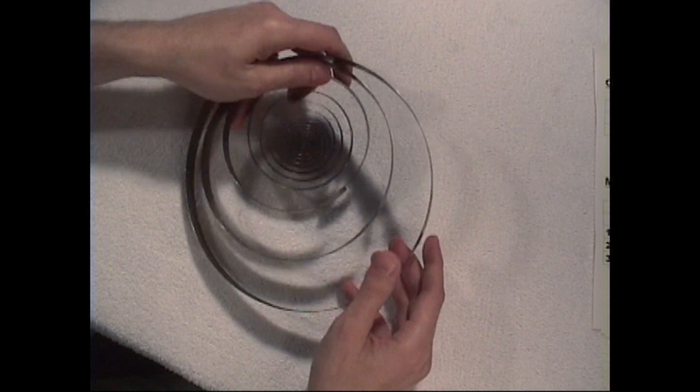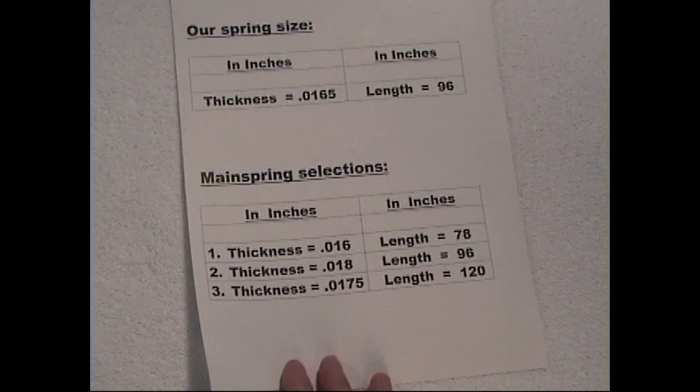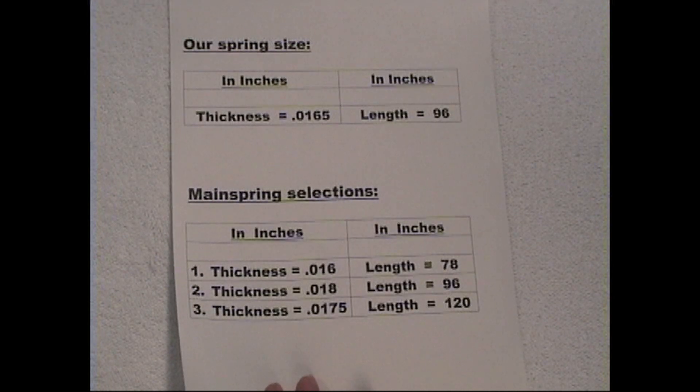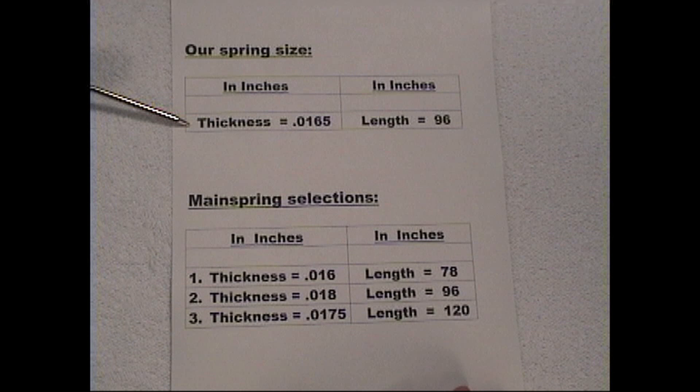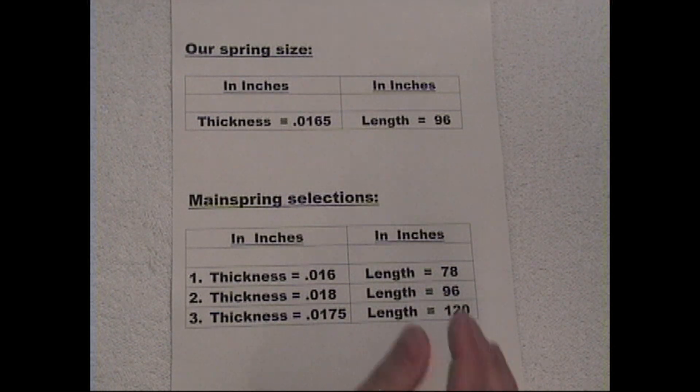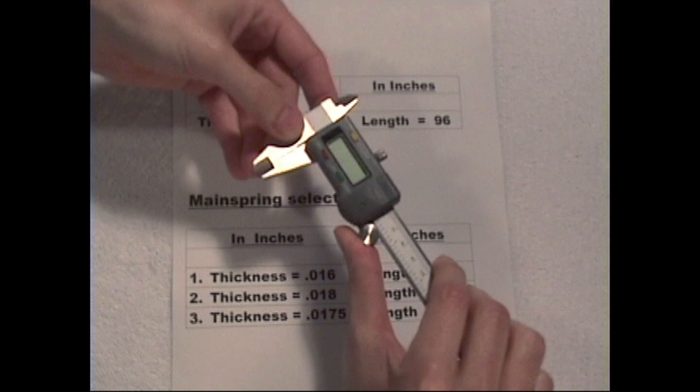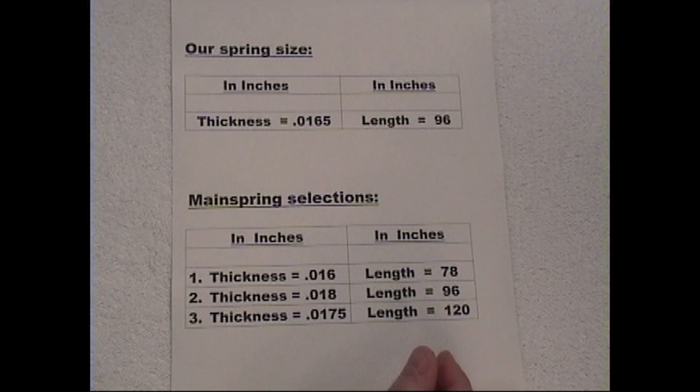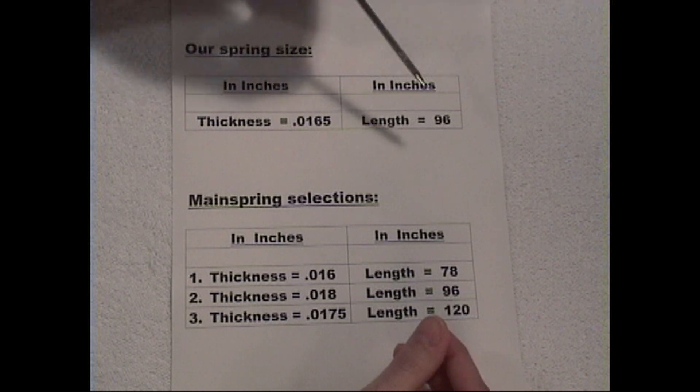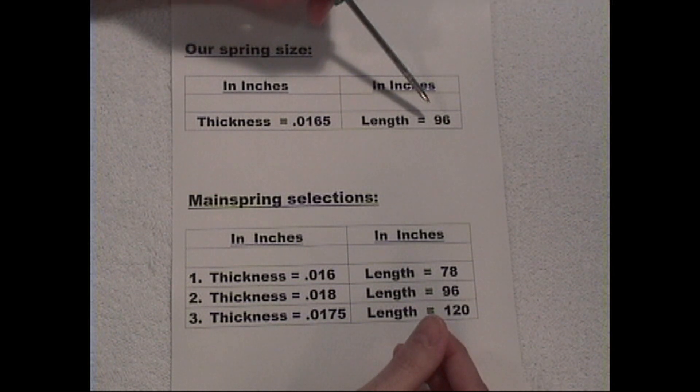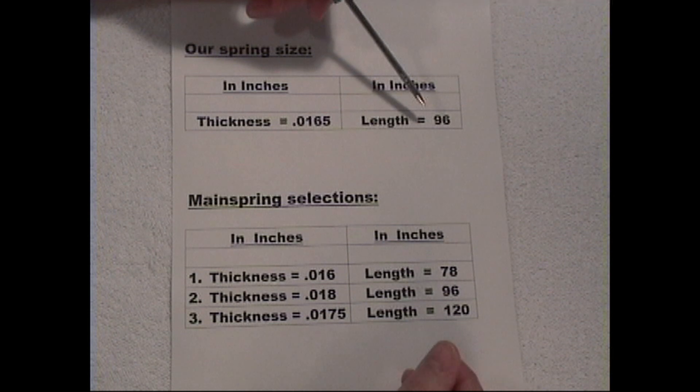Let's look at some information. The first thing we're going to look at are the measurements of our spring. Our spring, its thickness, which I've measured using a caliper like this one, comes out to be sixteen and a half thousandths of an inch. And its length is ninety-six inches uncoiled. So you'll have to uncoil it and measure the length, but this one comes out to ninety-six.